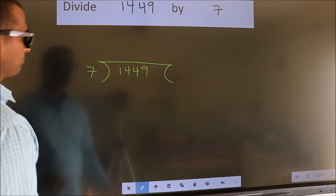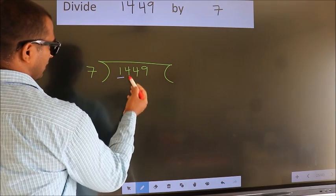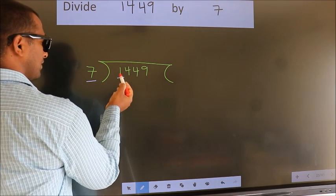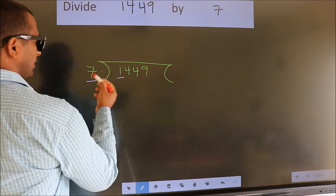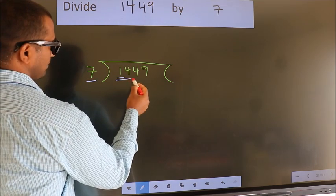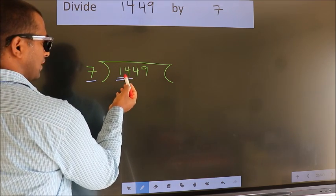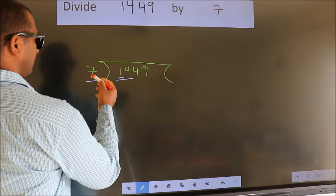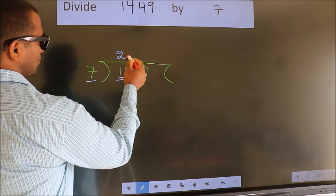Next. Here we have 1, here 7. 1 is smaller than 7. So we should take 2 numbers: 14. When do we get 14? In the 7 table. 7 twos, 14.